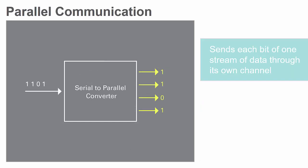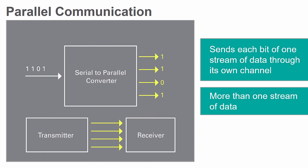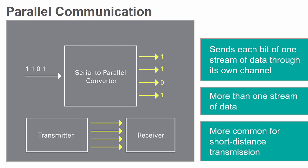In contrast, parallel communication sends each bit of a single stream of data through its own channel, creating more than one stream of data. It is more expensive since it requires more material but used for short distance transmissions such as RAM.